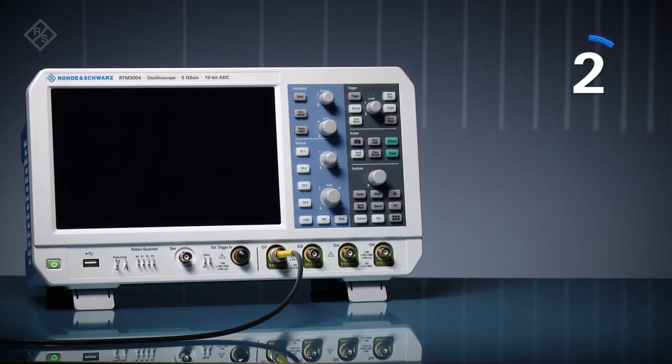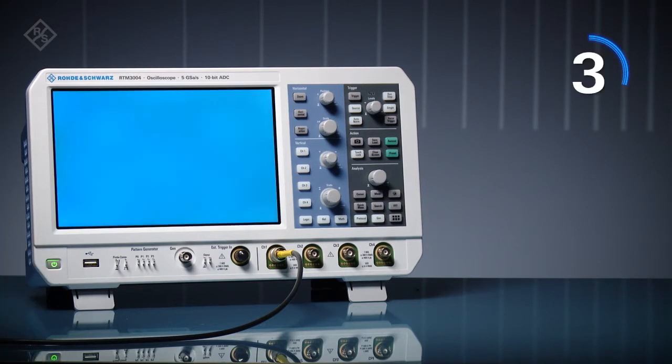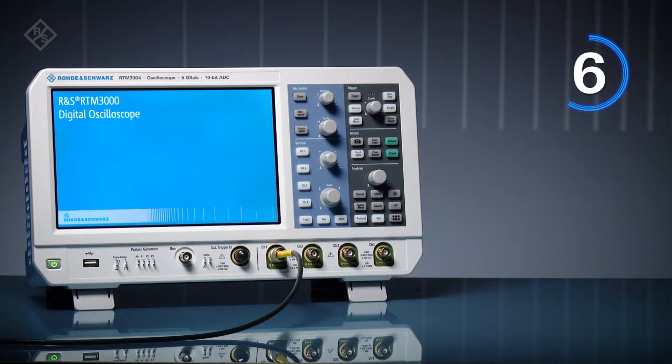Rohde & Schwarz RTM 3000 Series Oscilloscopes boot in about 10 seconds, faster than other scopes in its class.